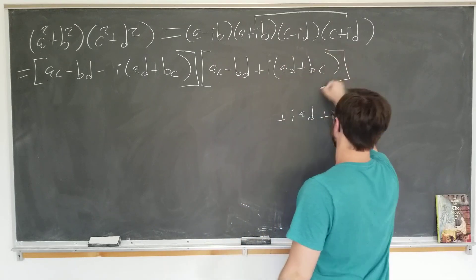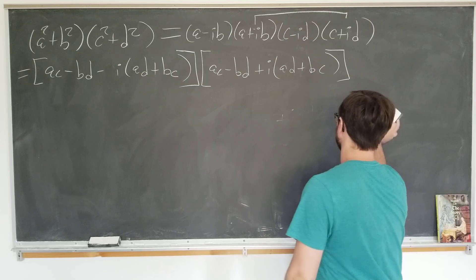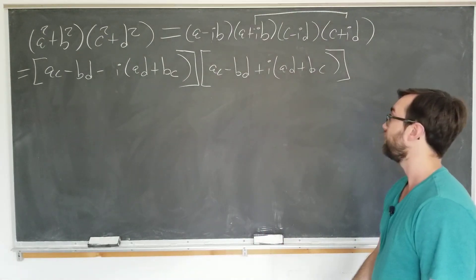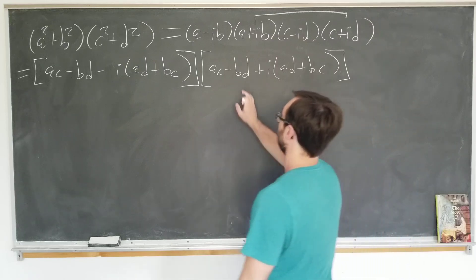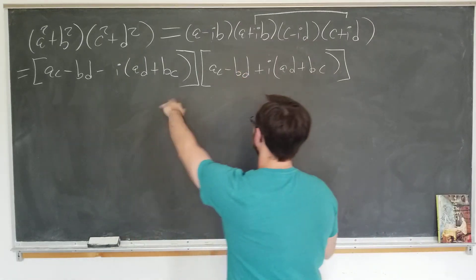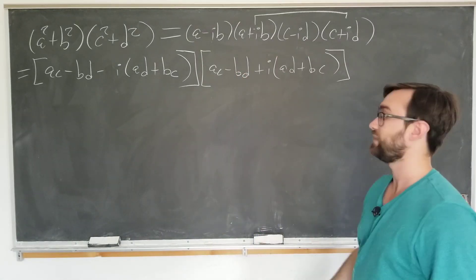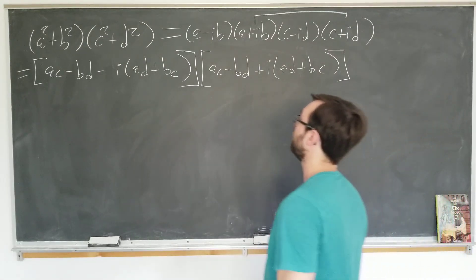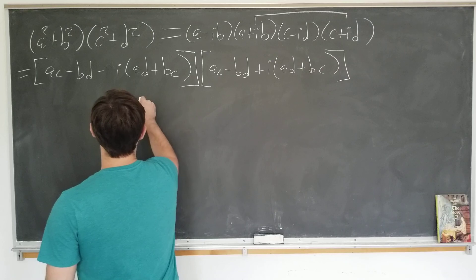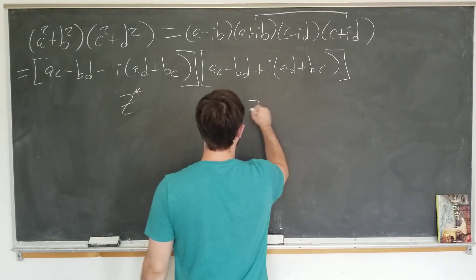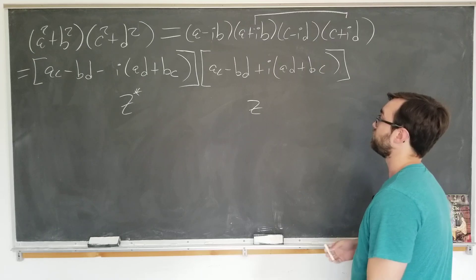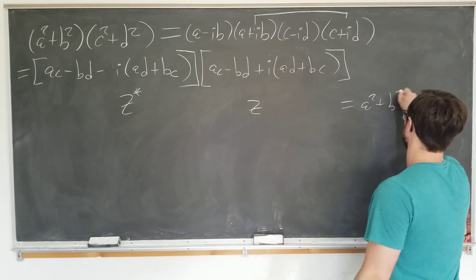Now looking at this, we notice something quite remarkable. So we have the same real component, but the imaginary component is the same, but separated by a minus i. So it's conjugate. So this is a form of z star z by itself, which we can now write as a squared plus b squared.